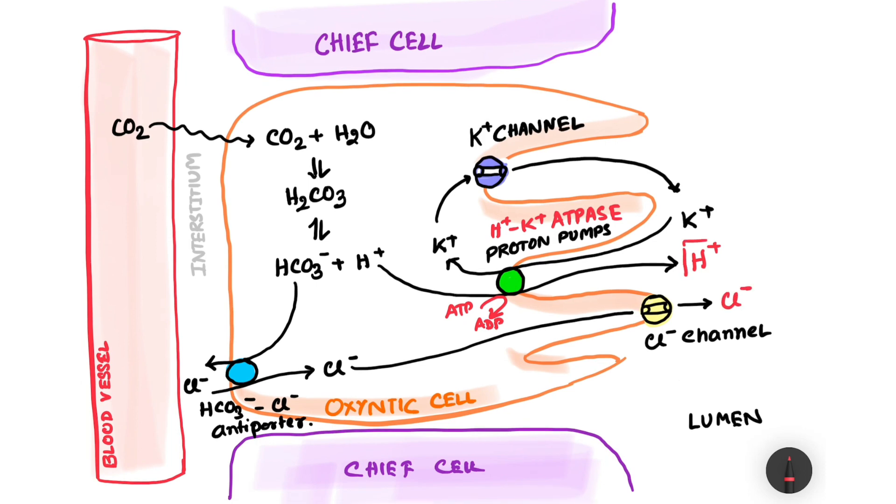Now this H plus ion and the chloride ion together combine and finally form the HCL that we see in the stomach lumen. So this is the brief mechanism by which HCL is produced and secreted in the gastric lumen by the oxentic cells.